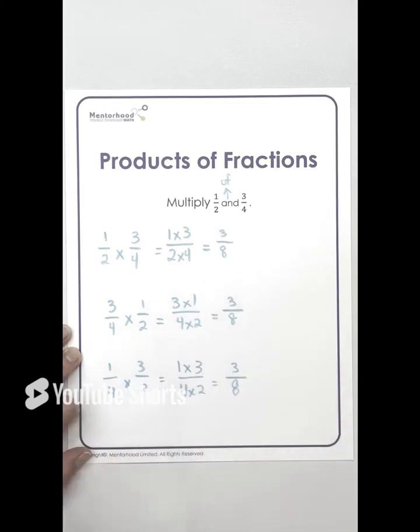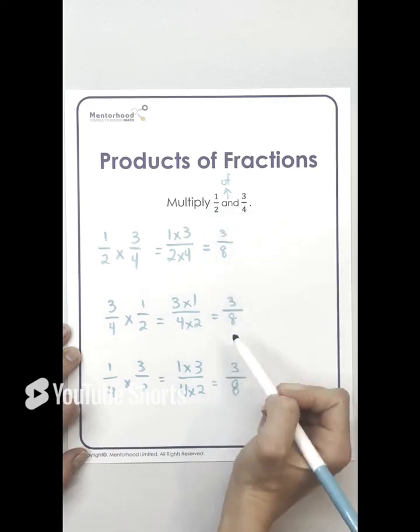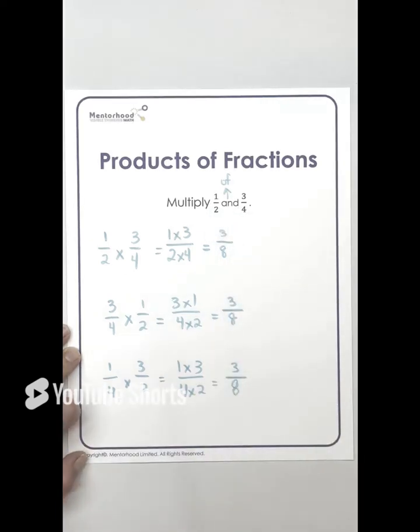And as you can see, you always get the same answer as long as you have the same on the top and the bottom. Your question might be a bit different, but you can see that you can switch them and you still get the same number. So one half of three quarters, or one half times three quarters, is three-eighths.